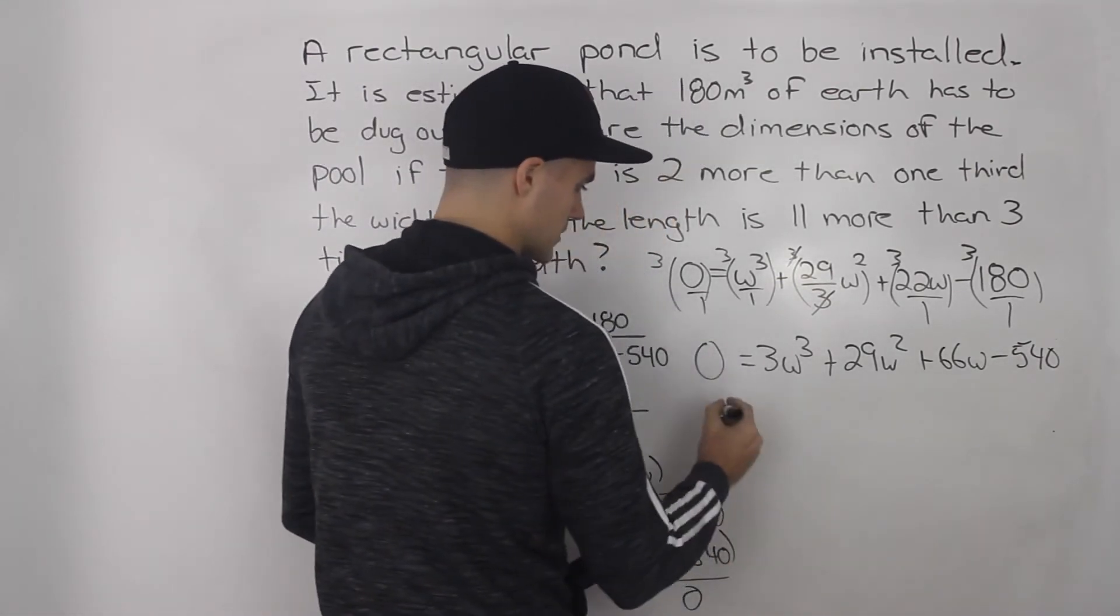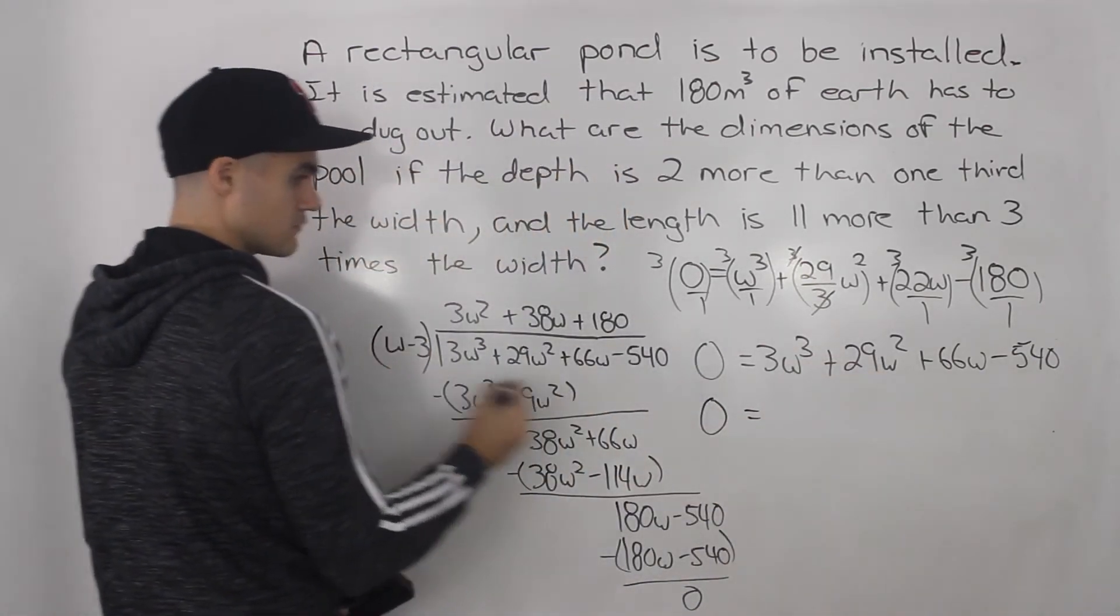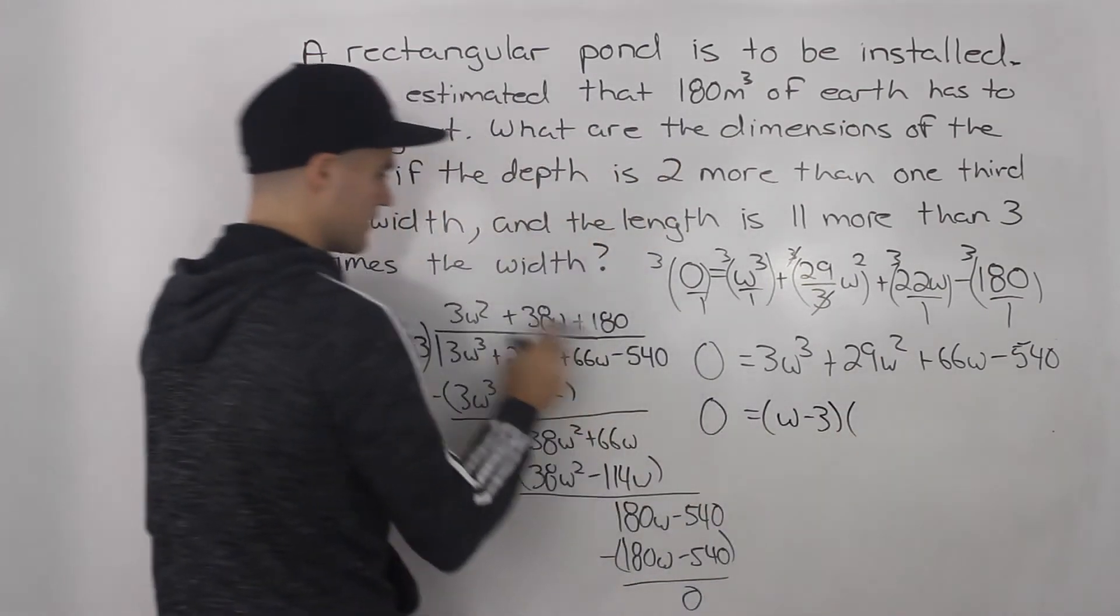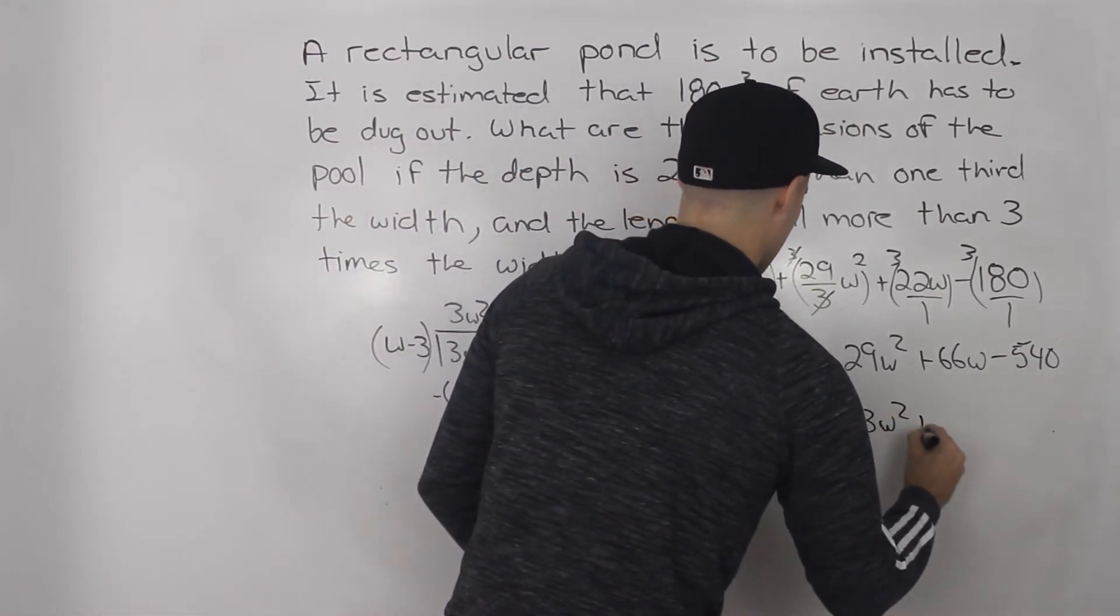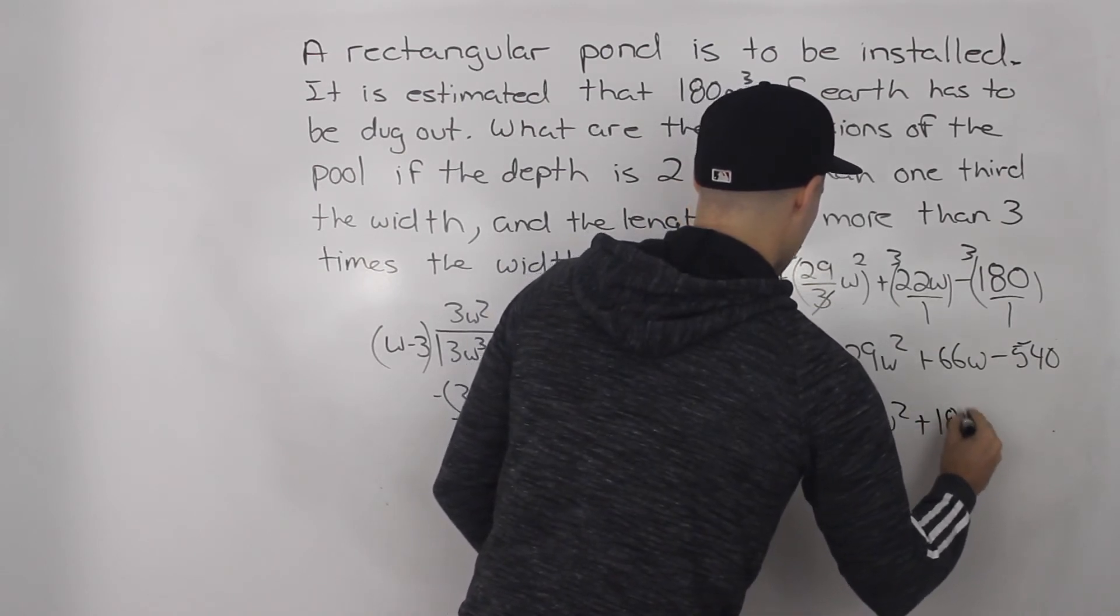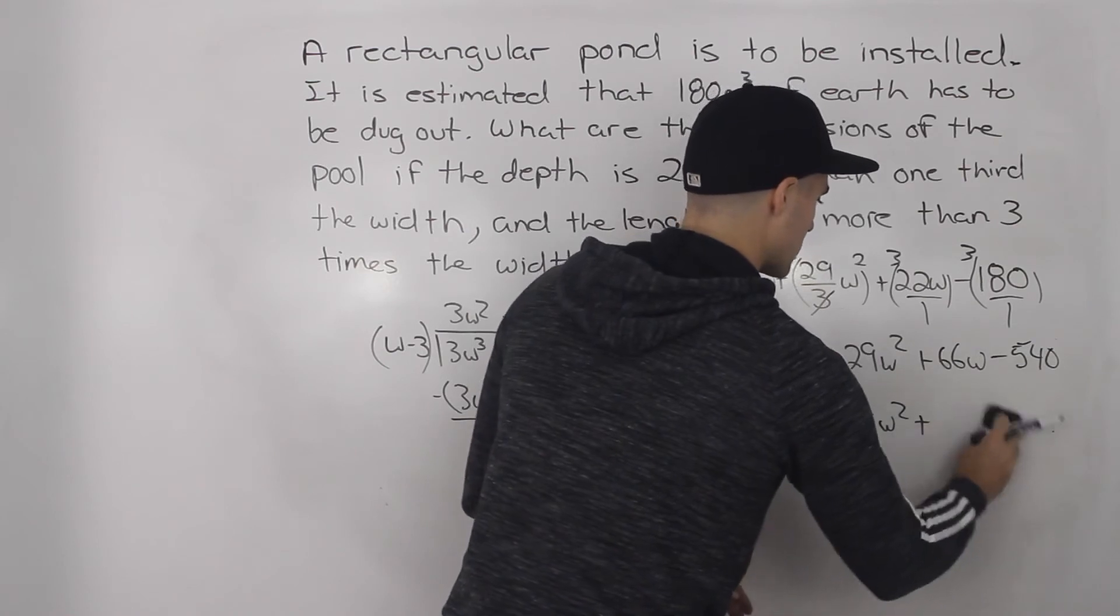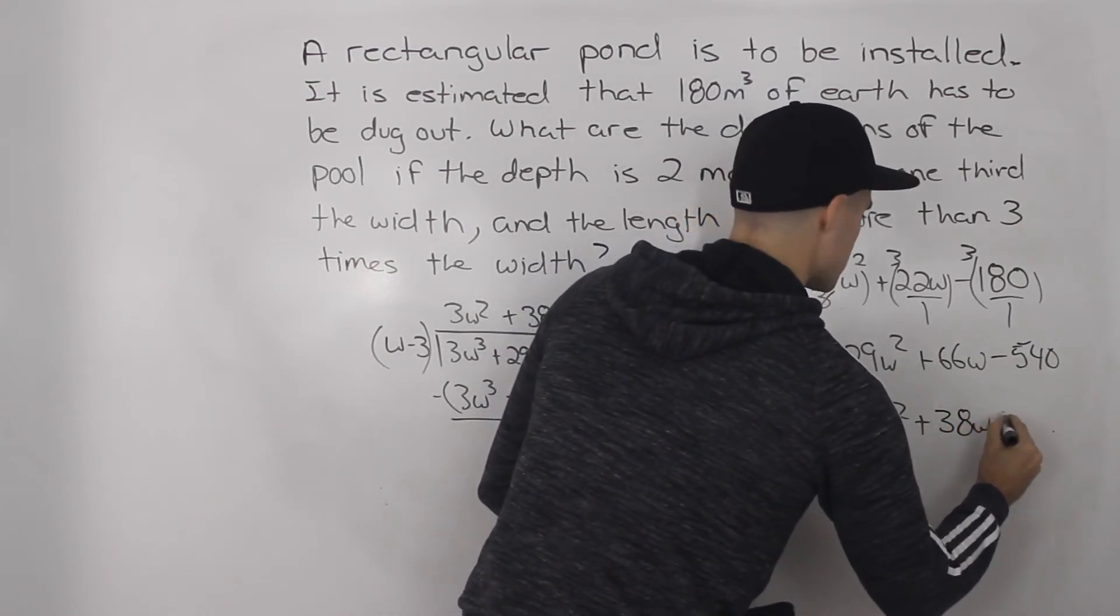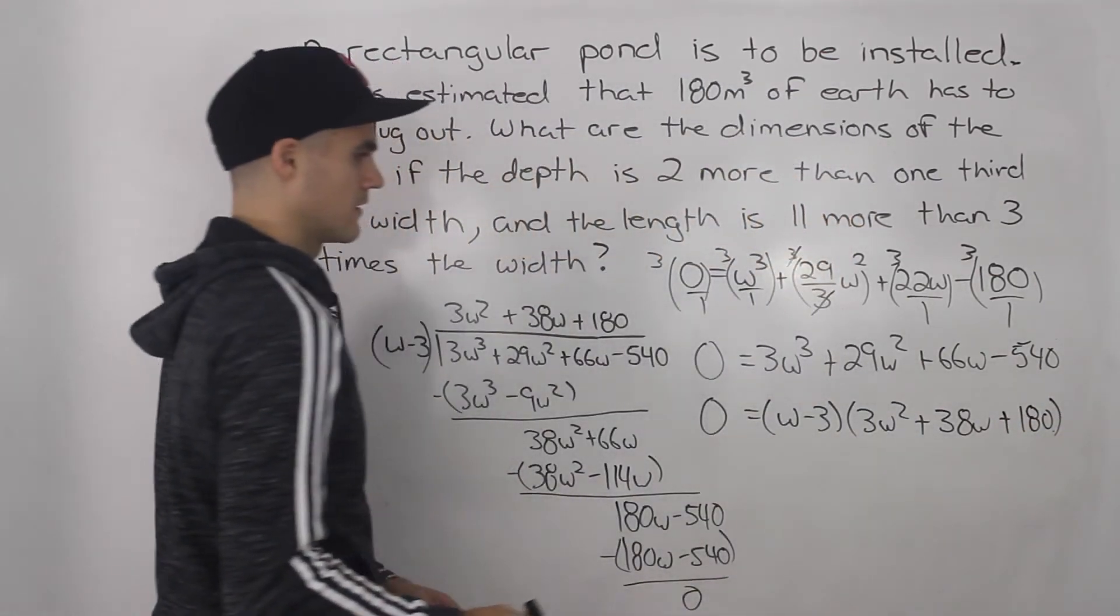So continuing on with this, we took this cubic, broke it down into this divisor, w minus three, and then this quotient here, three w squared plus 38 w plus 180.